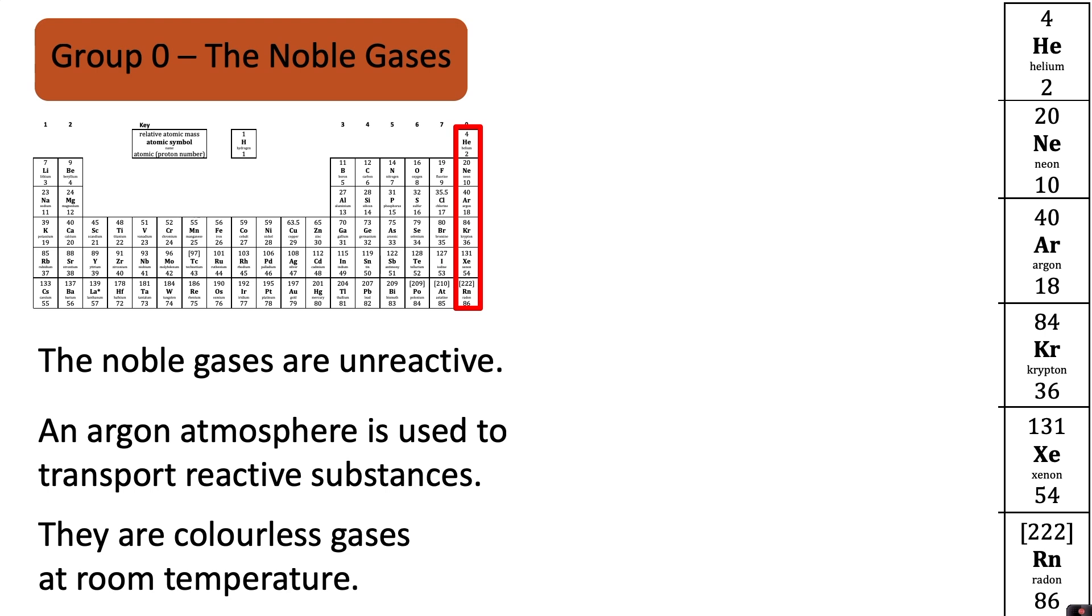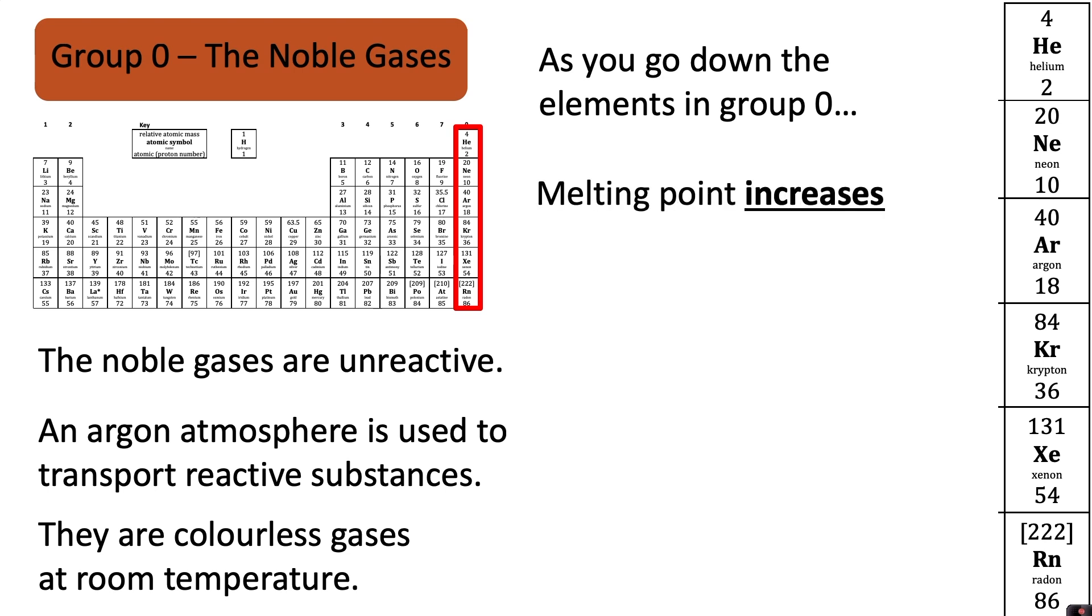Noble gases are colourless gases at room temperature. As you go down the elements in group zero the melting point increases and the boiling point increases.